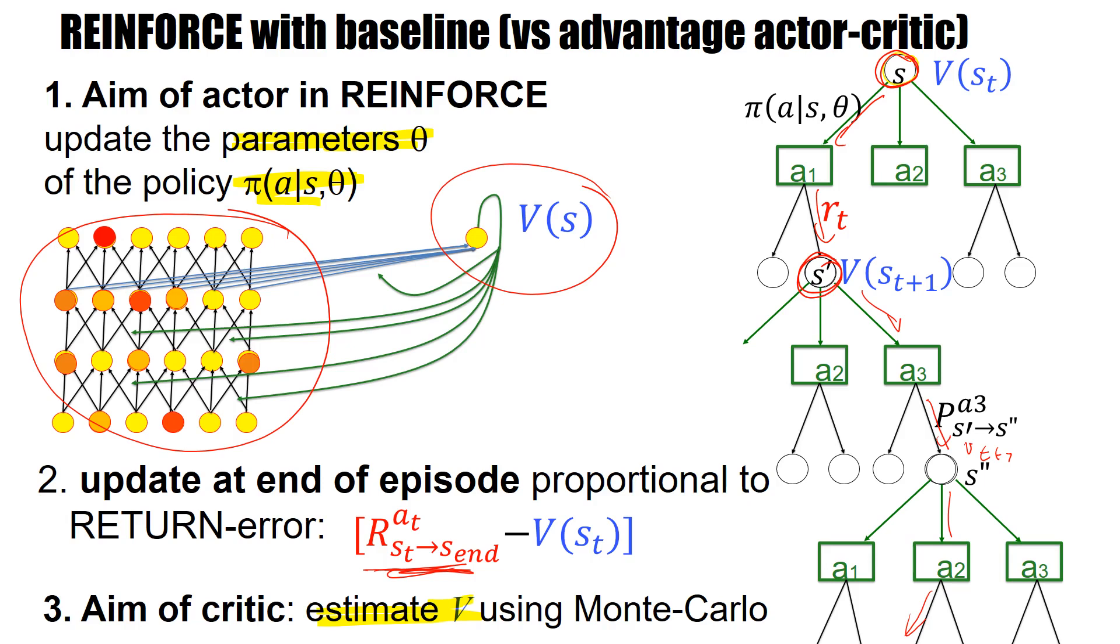So the difference really is in the way we estimate the V-values and in the depth of the backup diagram. I have to run to the end of the episode before I can update when I use reinforce with baseline, whereas I can update after a single transition if I use the advantage actor-critic.